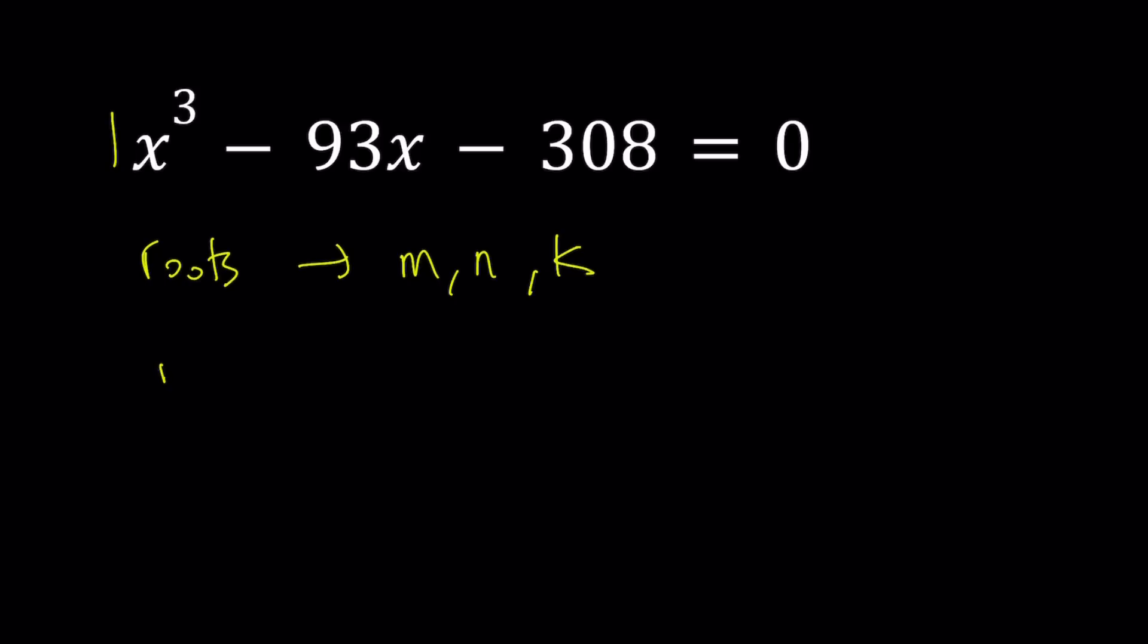But in this case, I can find m plus n plus k, which is the sum, and it's always negative b over a. That's what's cool about Vieta's formulas. Regardless of the degree of the polynomial equation, the sum of the roots is always negative b over a. Negative b being the coefficient of the second term, and a being the coefficient of x cubed in this case, which is 1, so we don't have to worry about it.